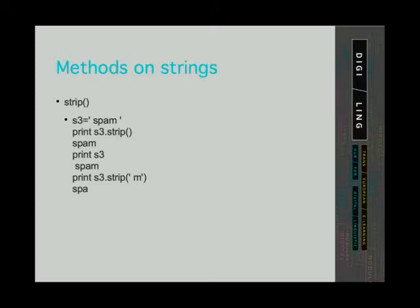We defined a string containing space, spam, space, and stored it in a variable. That way we have white space at the beginning and end of our string. When we call the method strip on our string, the program returns spam with no white space. In the last example, we defined the characters space and m to be removed from the beginning or end. The program returns spa — it removed the space and then the m because it was at the end. It doesn't matter if we put space then m or m then space; the method returns the same result.